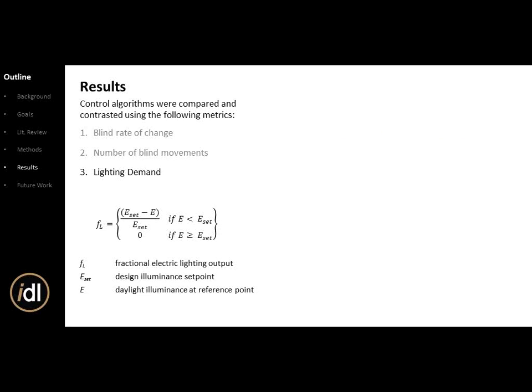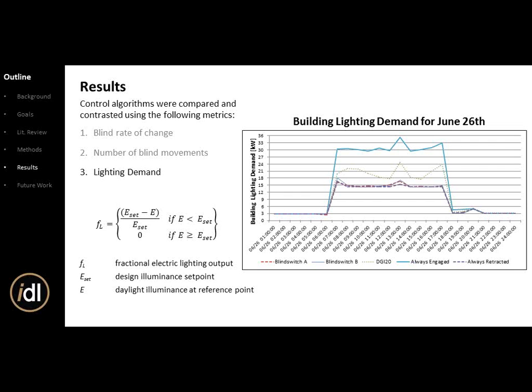Lighting demand was the next comparison metric — basically your set point inside minus the actual value, divided by the set point. For June 26th across all five models: always engaged has the highest demand because no daylight comes in, so you're using the most electric lighting. DGI in green is close behind. Blind Switch A, B, and always retracted have very similar lighting demand values.